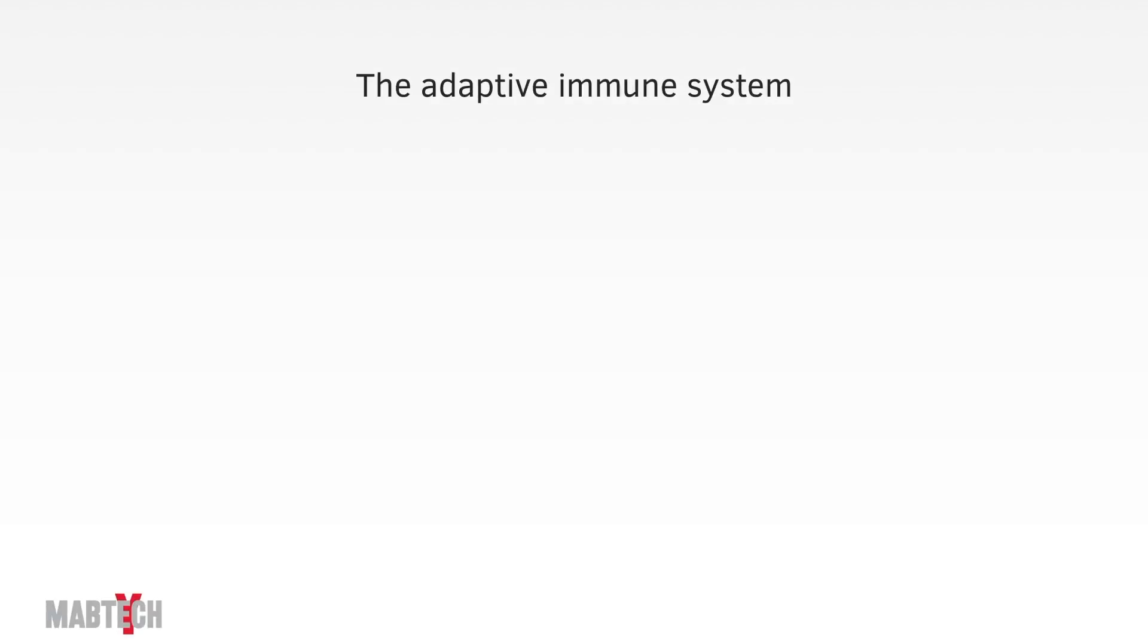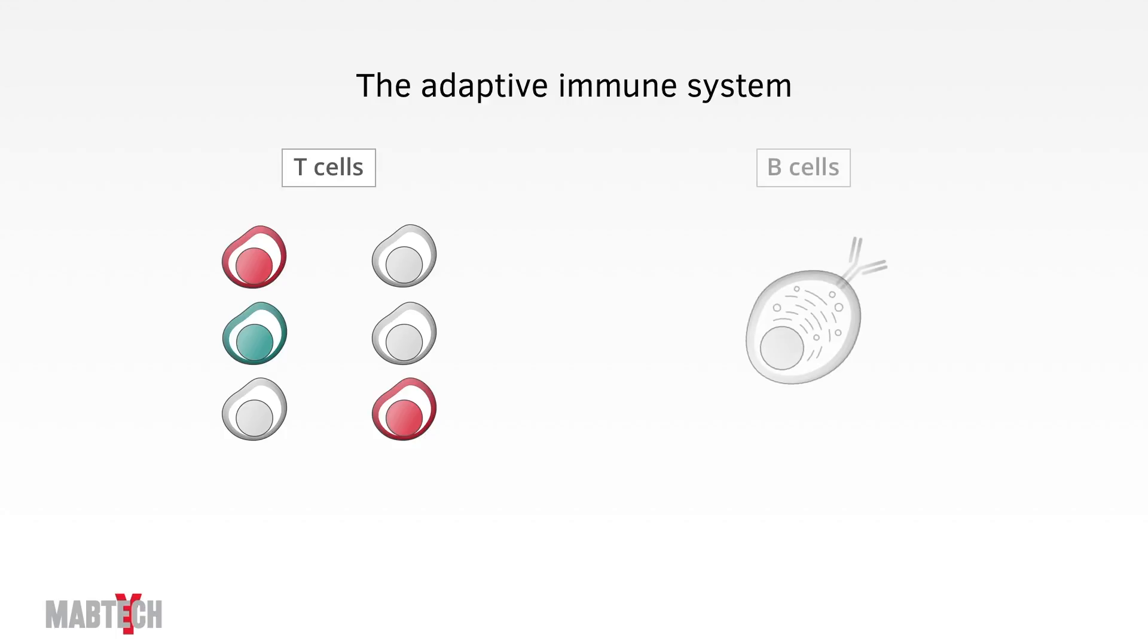Welcome to the first lecture in a series of Mubtec videos about the immune system. This first movie is a 15-minute crash course in adaptive immunity, covering T-cells and B-cells, the two main players in the adaptive immune system.